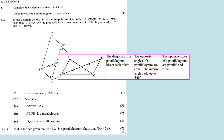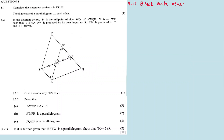For 8.1, we need to complete the statement so that it is true: the diagonals of a parallelogram do what to each other? If you know your properties of a parallelogram, you can complete the statement. In Euclidean geometry, what's important is knowing properties of special quadrilaterals — your parallelogram, your square, your rectangle, and so on. The diagonals of a parallelogram bisect each other. So our answer is: bisect each other.